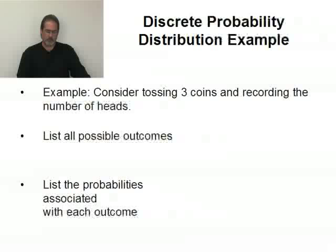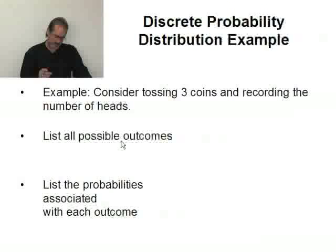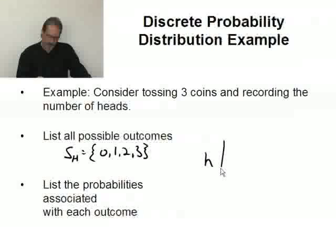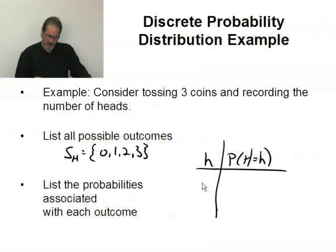Now consider tossing three coins and recording the number of heads. It's a new scenario. List all the possible outcomes. Well, we've done this before, and I'll show you again here in a moment. But the sample space, actually I should write this as S sub H. So the sample space for the number of heads will be {0, 1, 2, 3}. Every time I toss three coins, I'm either going to get no heads, one head, two heads, or all three heads. That's all that can possibly happen. So now I'm going to list the probabilities that are associated with each individual outcome.